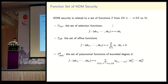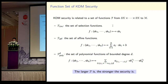KDM security is related to a set of functions F. Typical function sets include the set of selection functions, the set of affine functions, and the set of polynomial functions of bounded degree D. The larger the function set F is, the stronger the KDM security is.